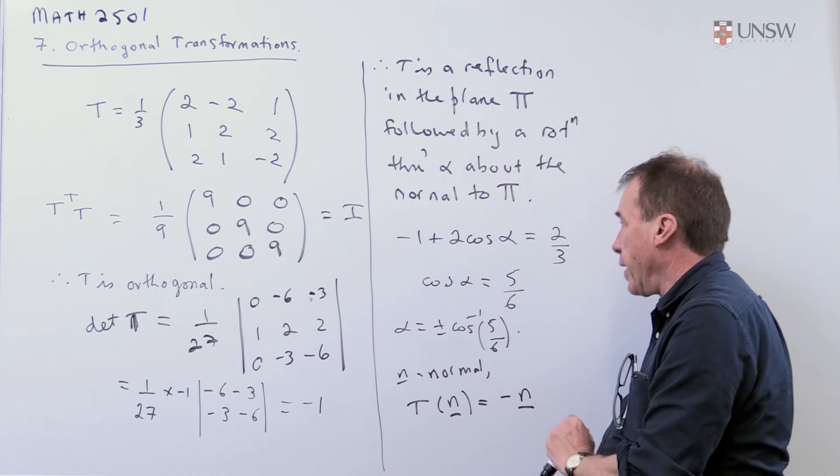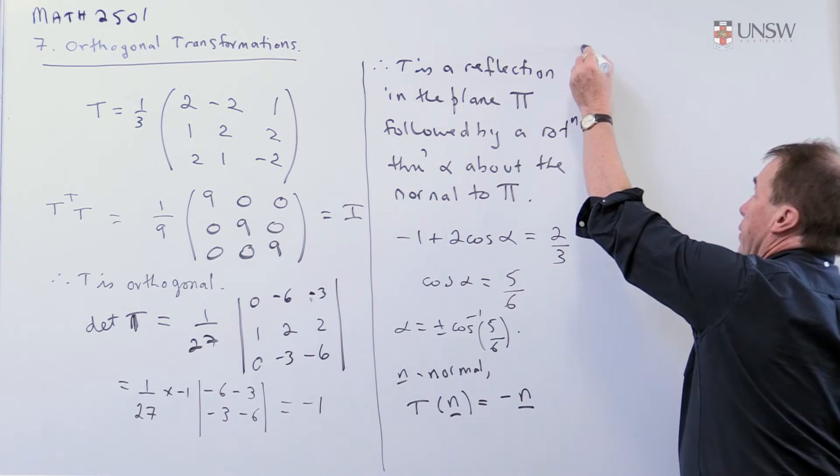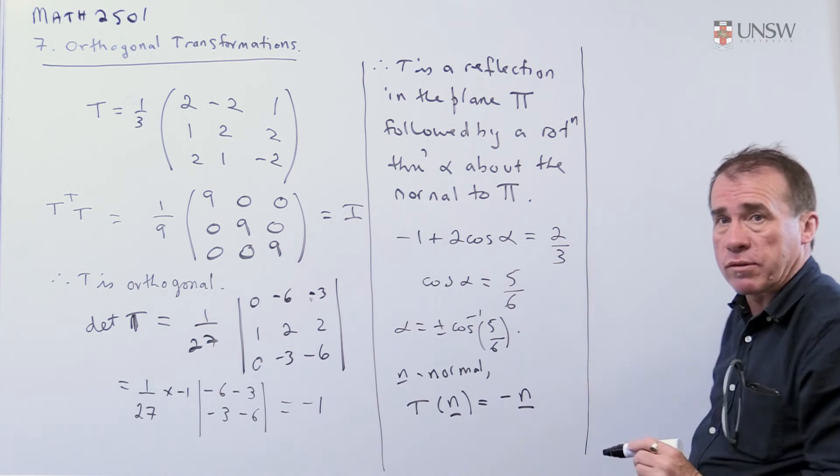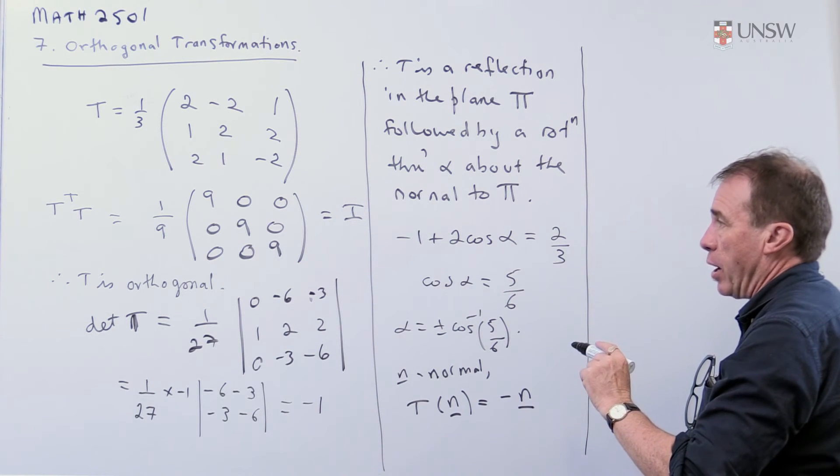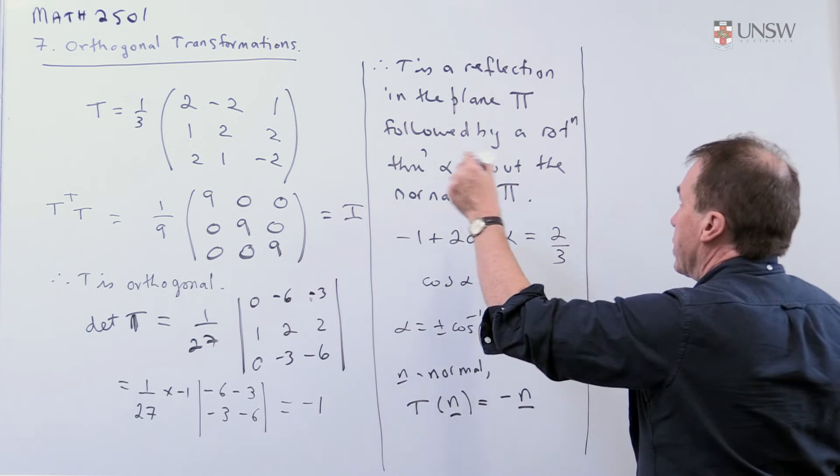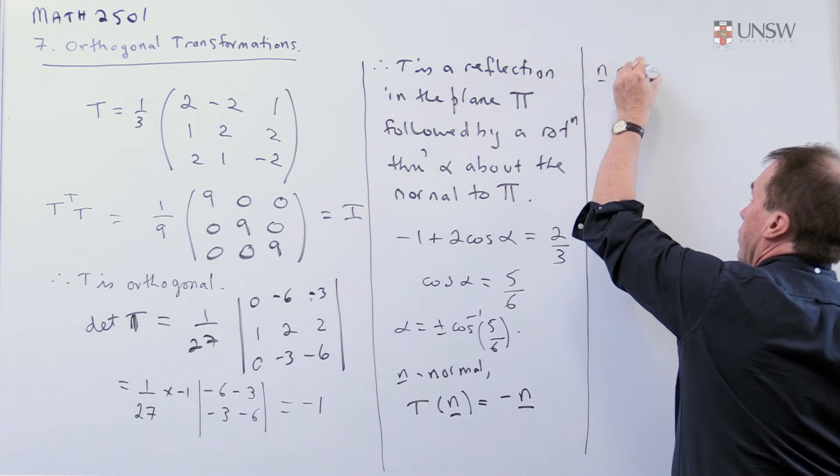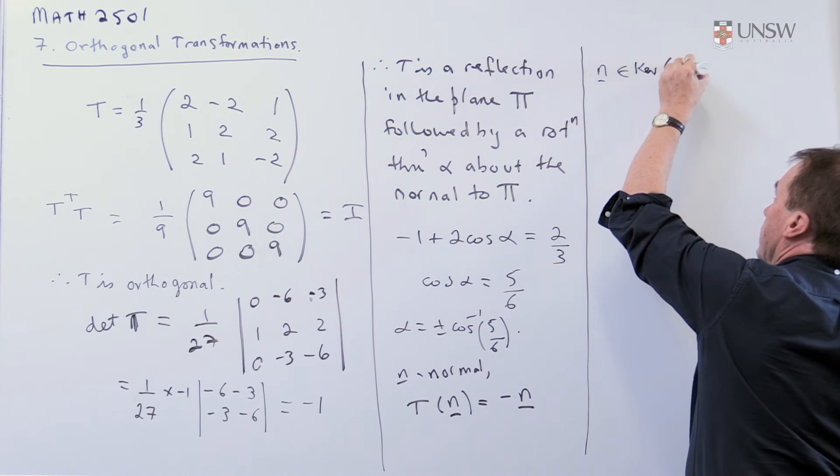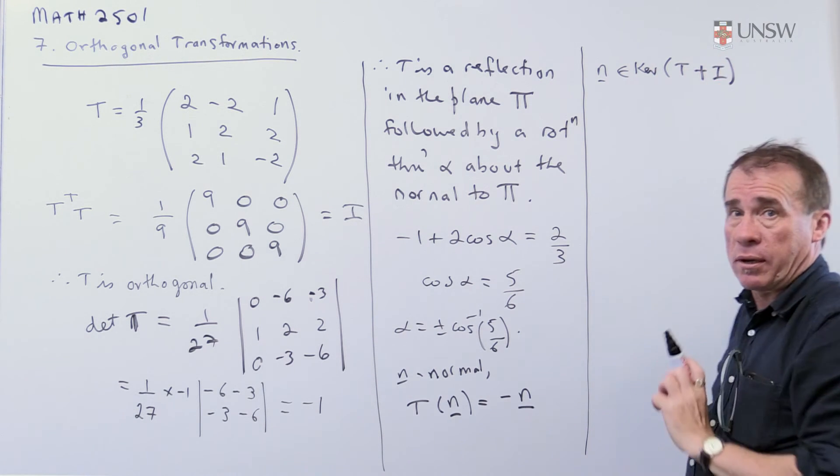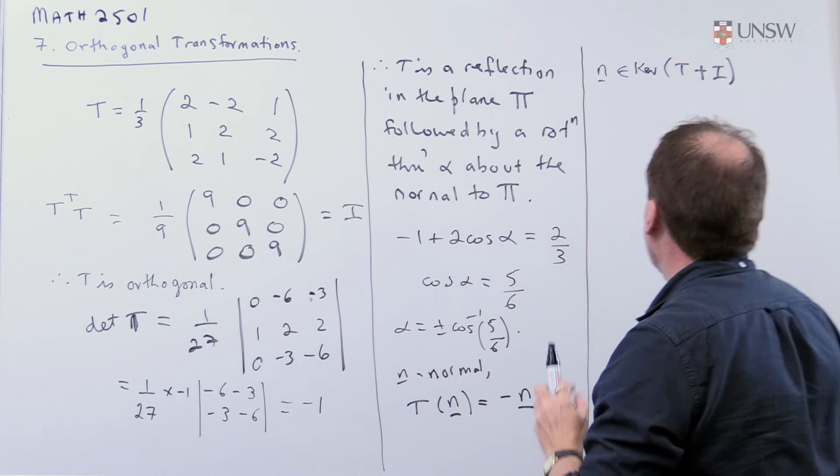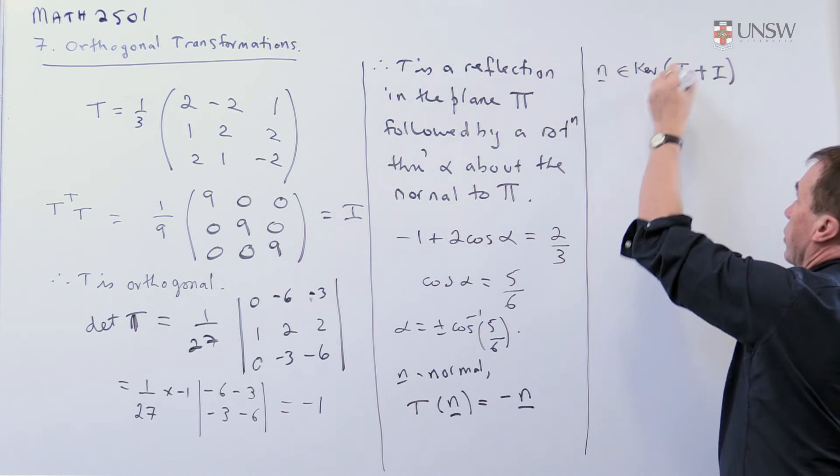So this means this vector n is an eigenvector corresponding to lambda equals minus 1. So I'm going to get the eigenspace for minus 1 for this matrix. So n belongs to the kernel of t minus minus i, so t plus i. It's going to be one of the eigenvectors in the kernel of this.